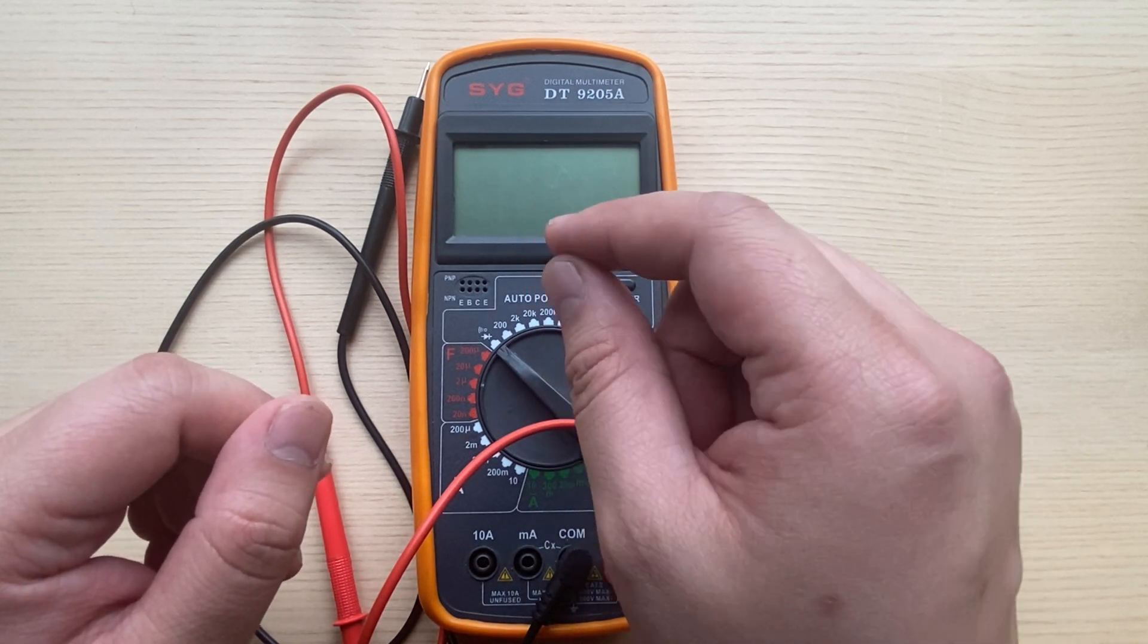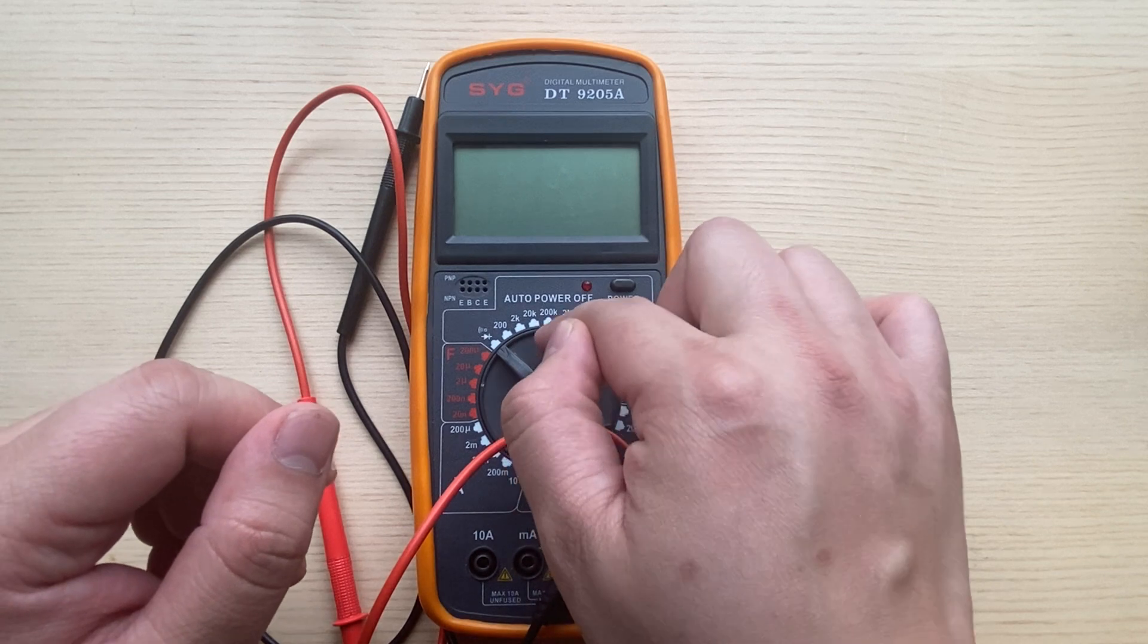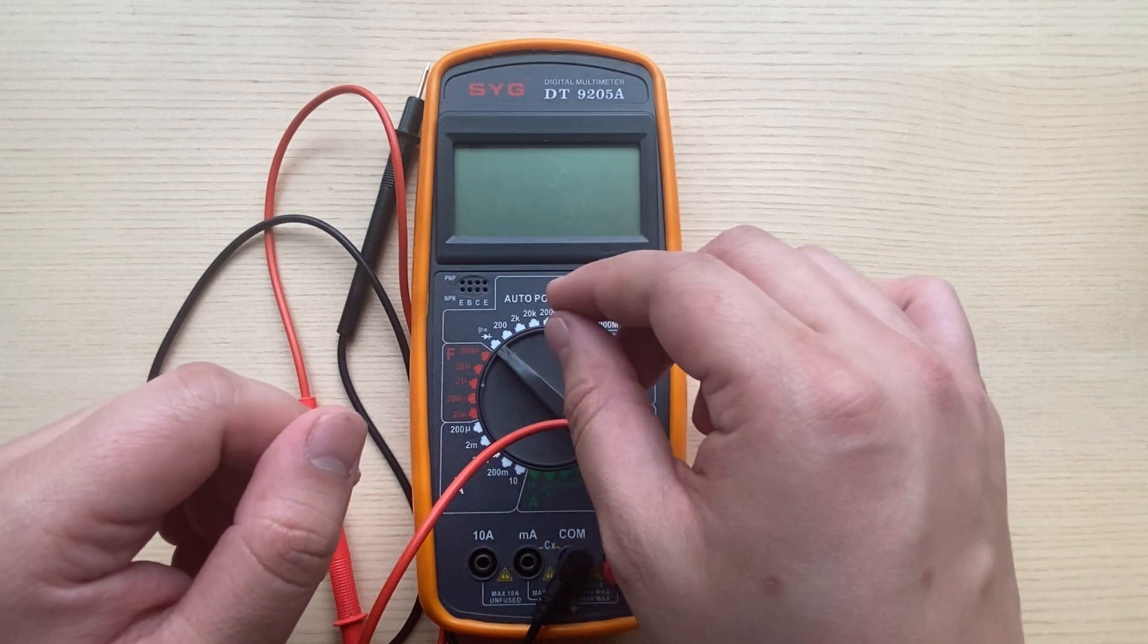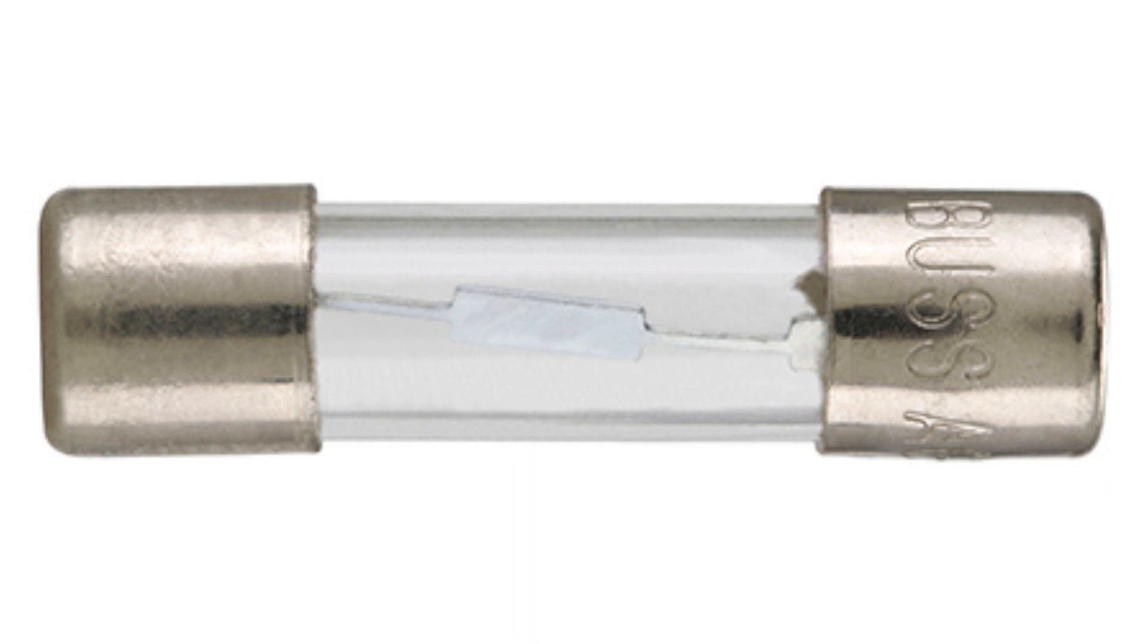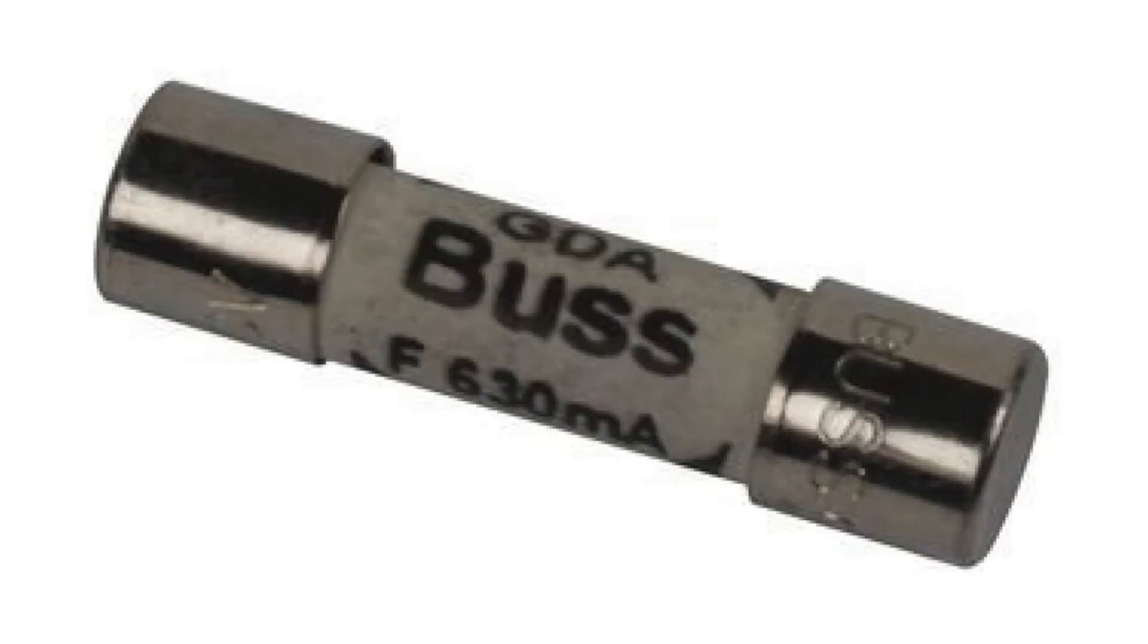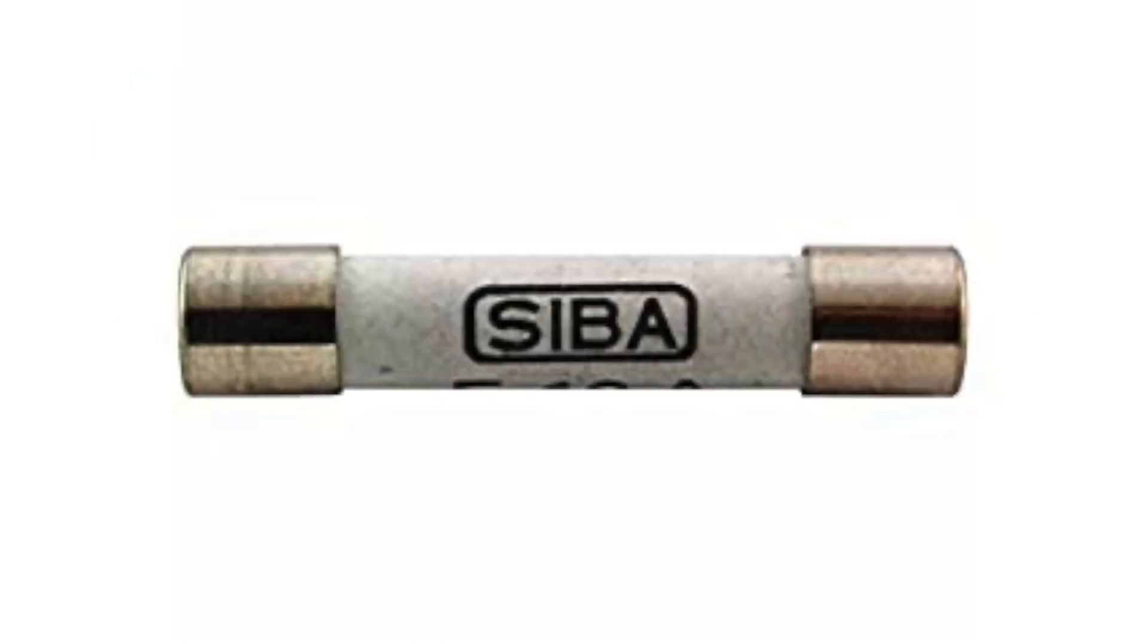The most common fuses in multimeters, like I've got here, are glass and ceramic fuses, like a Bussman AGX-2, GDA-630mA, and CBUS ceramic fuses.